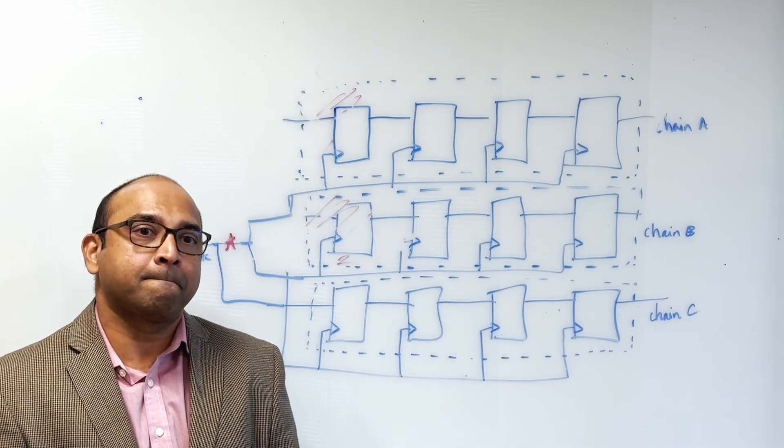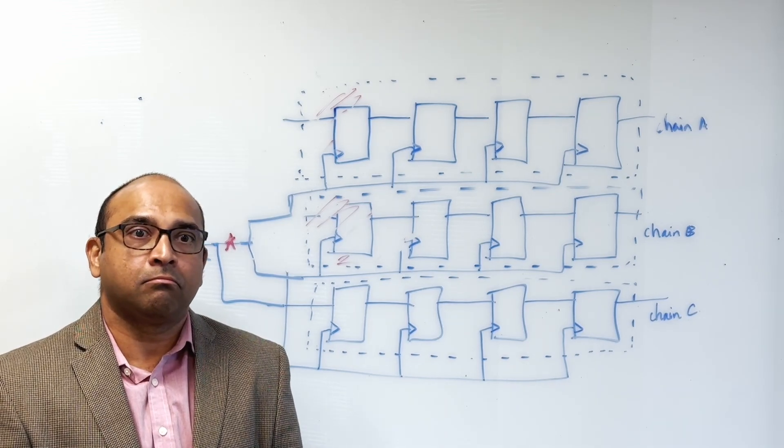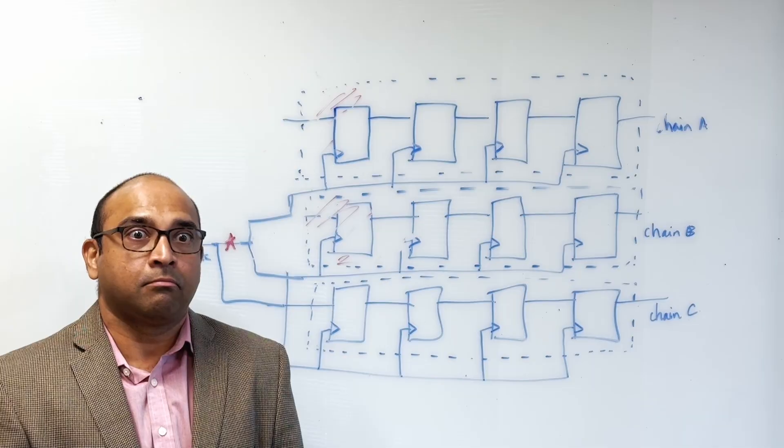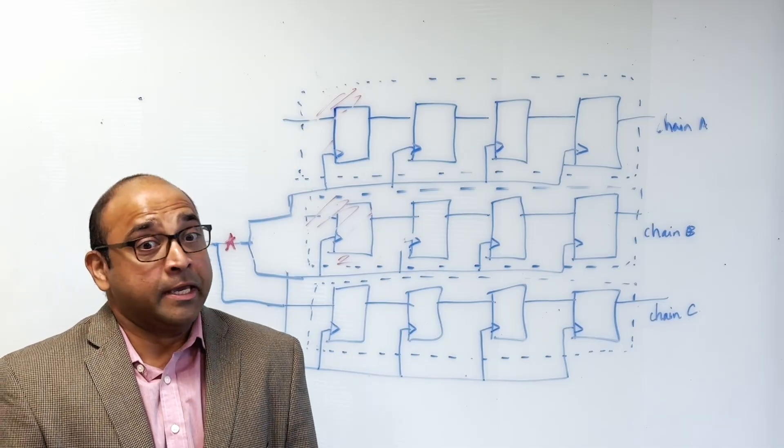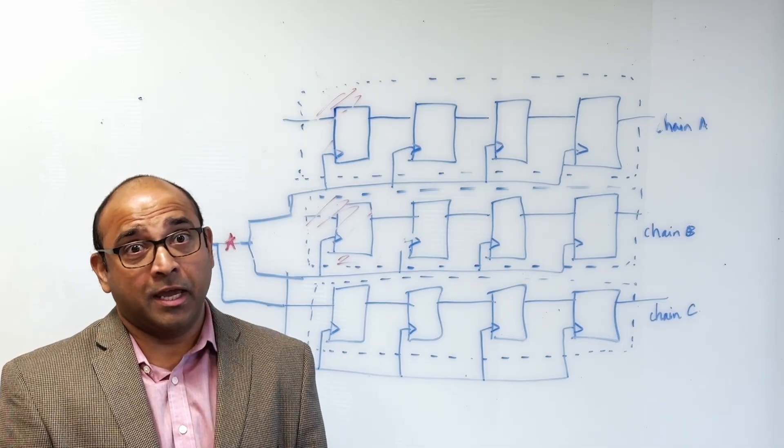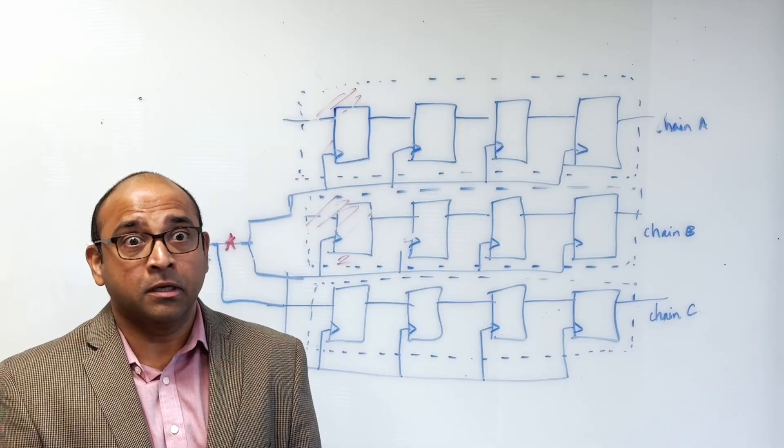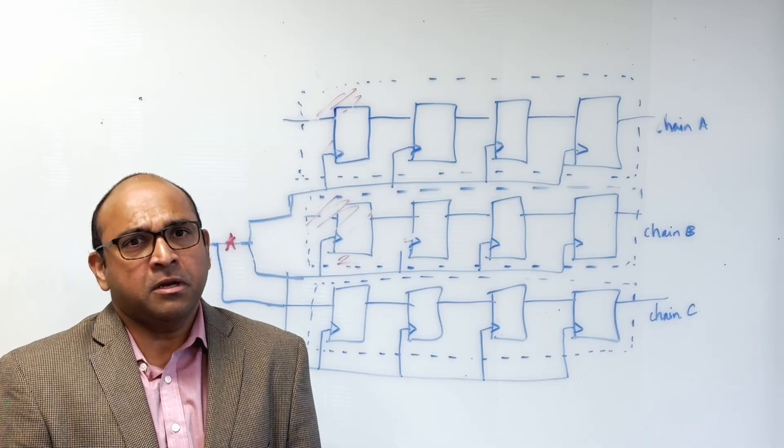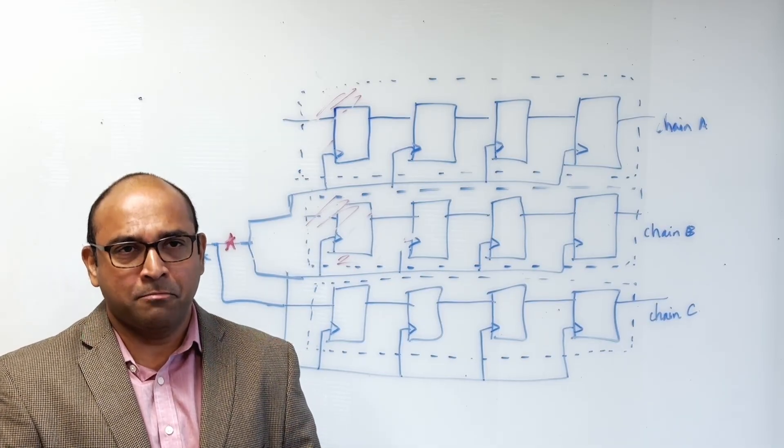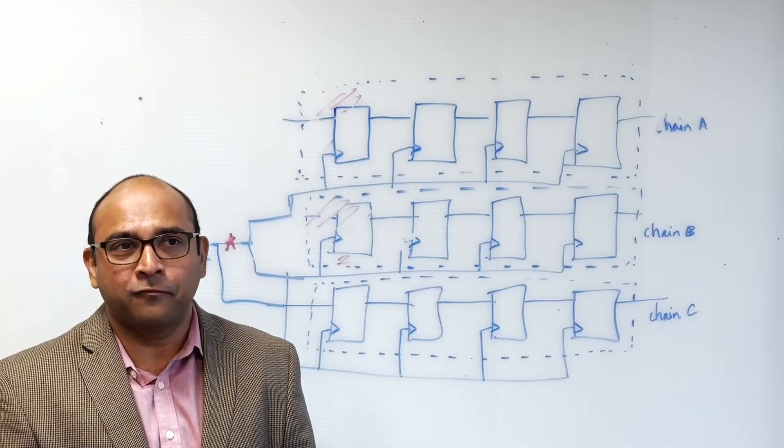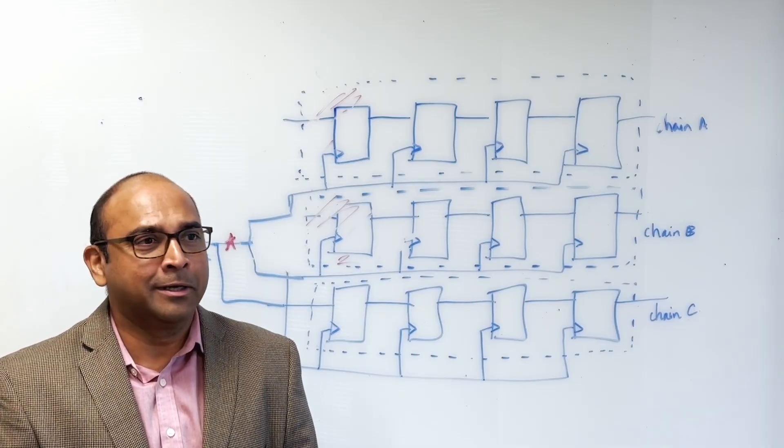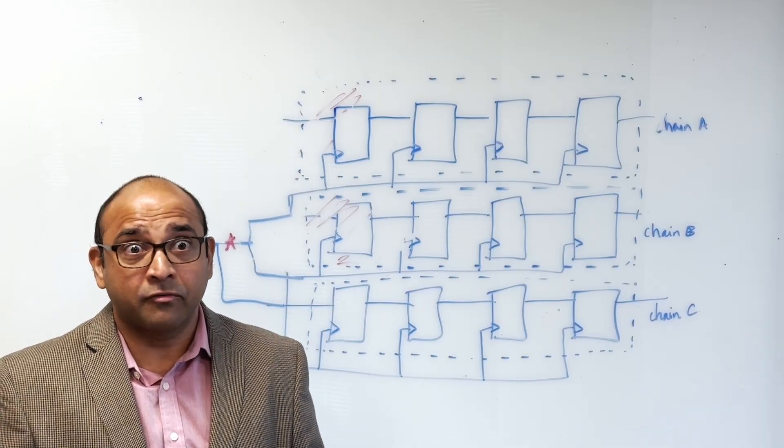How does this change as we start getting into some of these really large chips, particularly the AI chips that are going into data centers? That's a great question. AI is all the rage for good reason. Semiconductor devices are in every part of our life, from our phones to our cars to data centers and AI's everywhere.